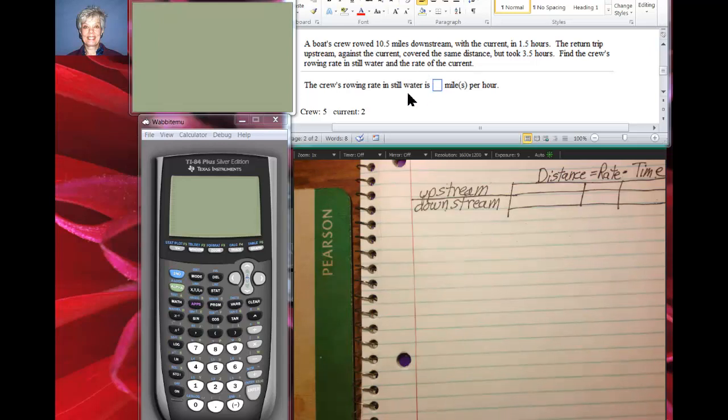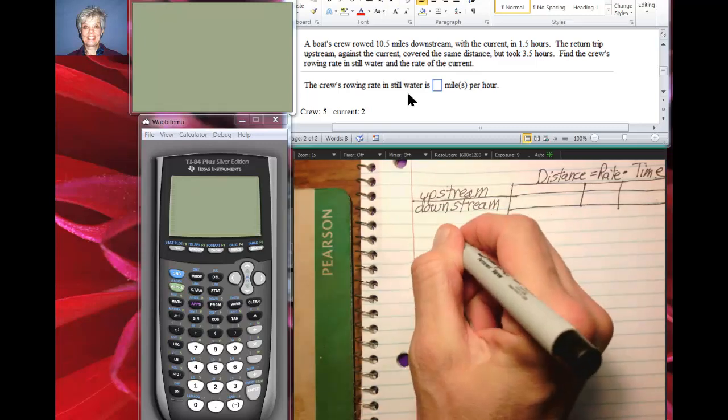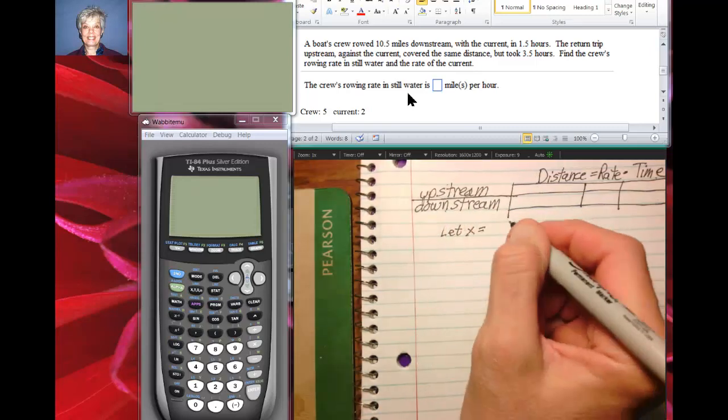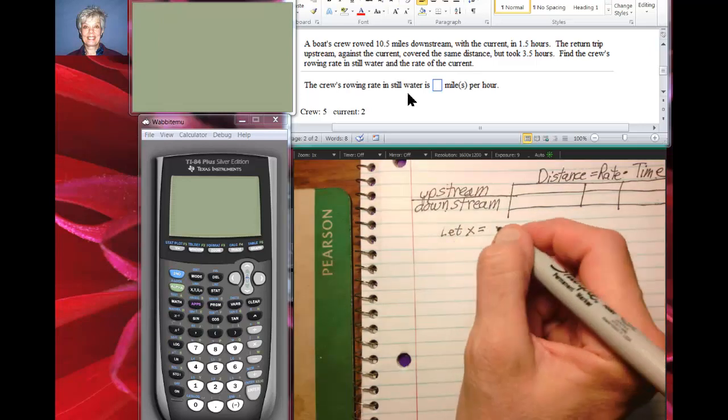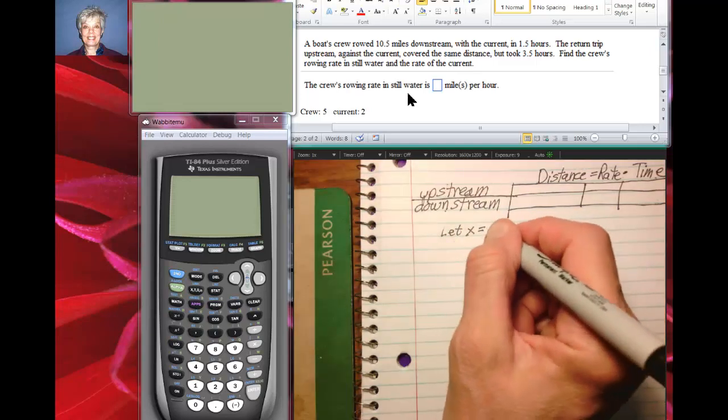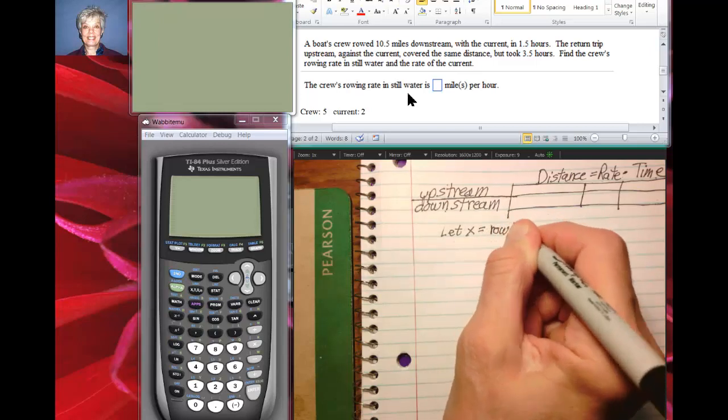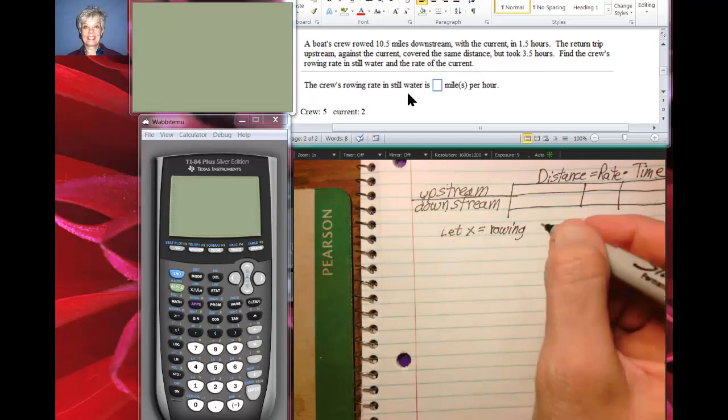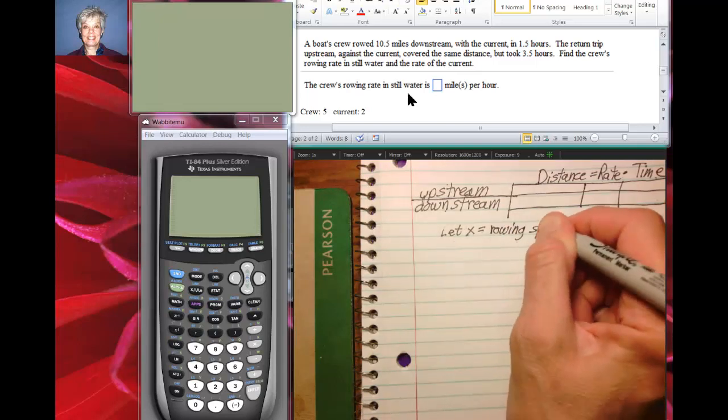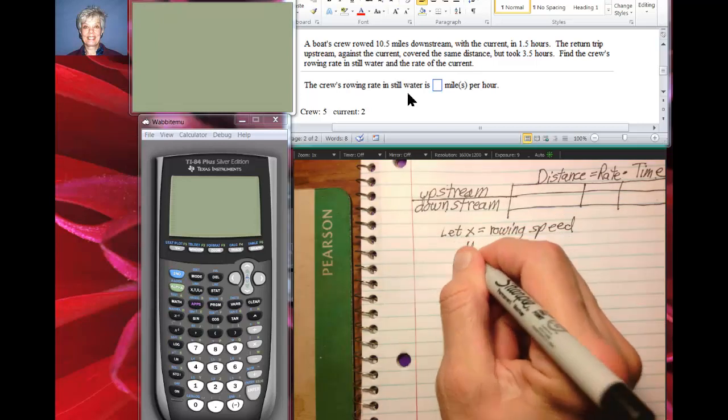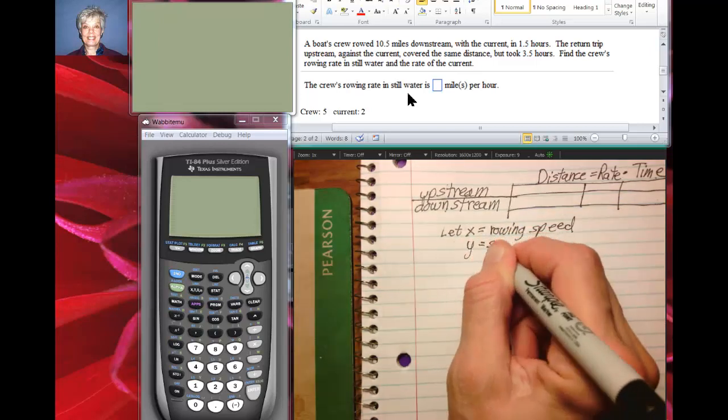So what we normally do is we use the letter X to represent the speed of the rowing or the speed of the boat. So let's call it rowing speed without the current. So that's what in still water means. Rowing speed all by itself. And then Y can be the speed of the current. So we're separating them.